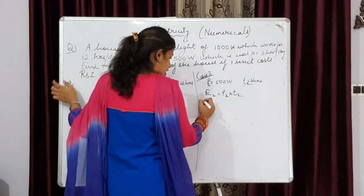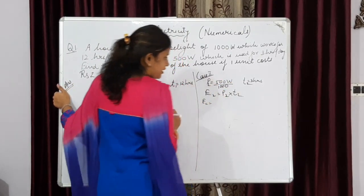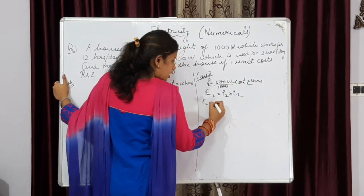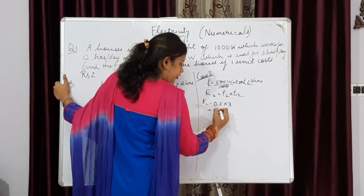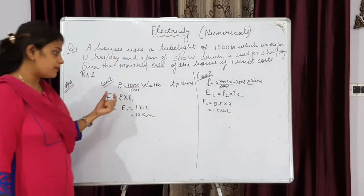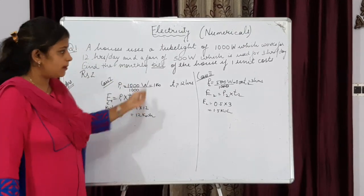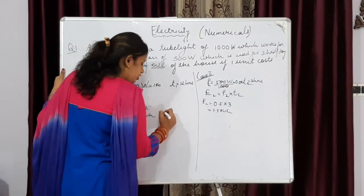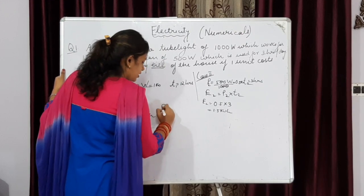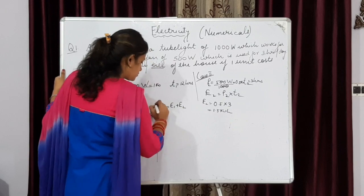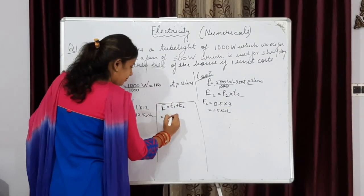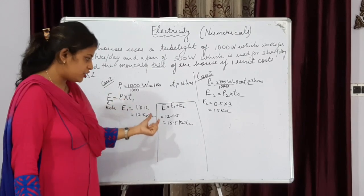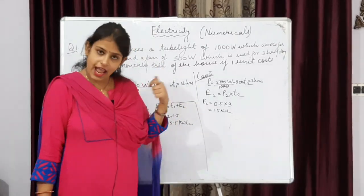Let's come to Case 2. Here also you have to convert the power given in watt into kilowatt: 500W ÷ 1000 = 0.5 kilowatt. Multiplying 0.5 by 3 hours, you get E2 = 1.5 kilowatt-hour. Now, electrical consumption is because of both devices for this particular home, so we add the total energy: E = E1 + E2 = 12 + 1.5 = 13.5 kilowatt-hour. This is the total energy consumed by the tube light and fan in a particular day.